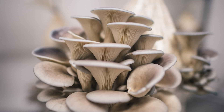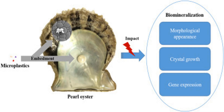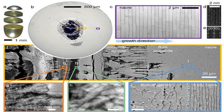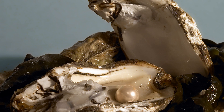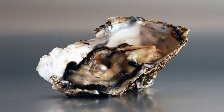In this segment, we will uncover the incredible process of pearl growth. The longer a mollusk is exposed to an irritant inside its shell, the larger the pearl it forms. When an irritant such as a grain of sand or a tiny organism finds its way into the mollusk's soft tissues, it triggers the secretion of nacre, a protective substance. As time goes by, layer upon layer of nacre is deposited over the irritant, gradually transforming it into a precious gem.